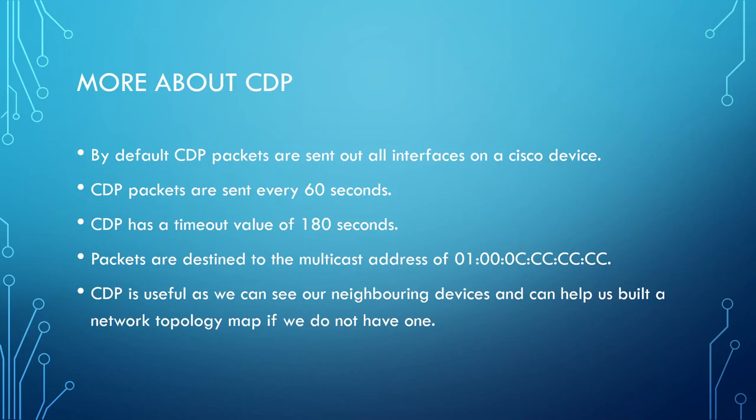So obviously there's a question of wanting to limit which interfaces CDP packets are sent out of. Even though CDP is enabled globally, what we really want is control over which interfaces the switch or router will send CDP packets out of. This is more important for switches because switches provide network access - your endpoints will plug into the switch. It makes more sense to control CDP on the switch, since a router will most likely only connect to other Cisco or networking devices.